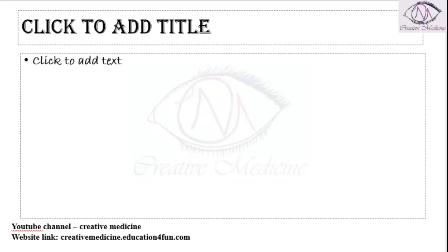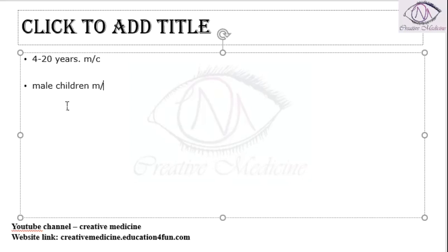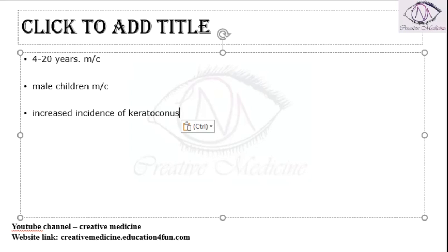It is most commonly seen in children and adolescents between 4 to 20 years of age, and is more commonly seen in male children. So in any exam question, if there is a male child or adolescent, think of vernal keratoconjunctivitis. There is also an increased incidence of keratoconus associated with this condition.